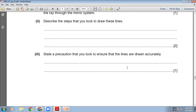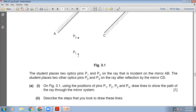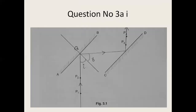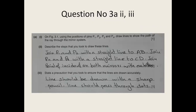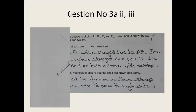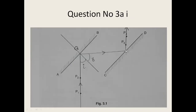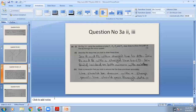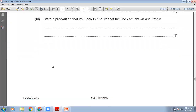Describe the steps you took to draw these lines: join P1 and P2 with a pencil and scale until you touch mirror AB; similarly join P4 and P3 until that line meets mirror CD; then join the point of incidence on AB and the point of incidence on CD with each other. State a precaution to ensure the lines are drawn accurately: use a sharp pencil and always draw the line through the dots, passing through the pin positions.